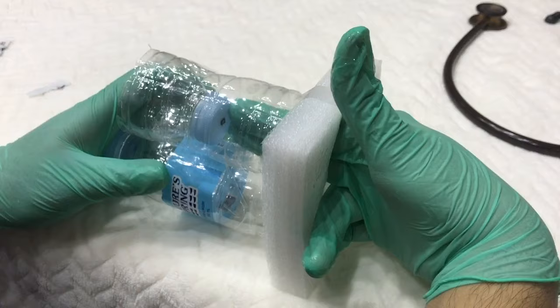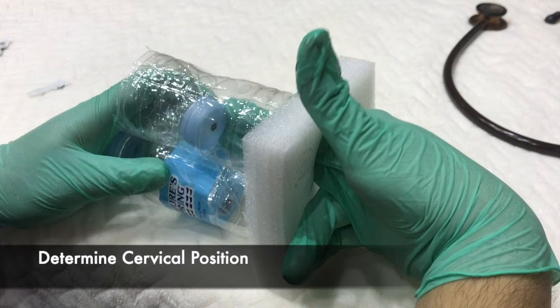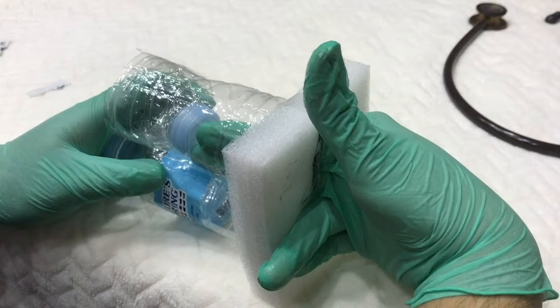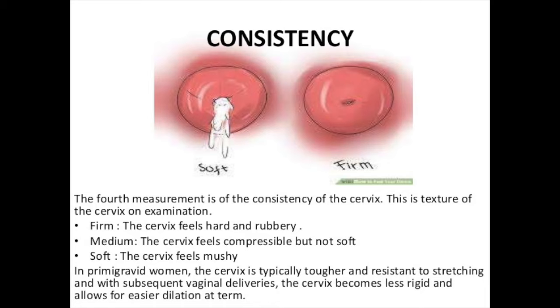The position of the cervix is determined by the relation of the cervical os to the fetal head and is categorized as posterior, mid-position, or anterior. Determine the consistency of the cervix as soft, firm, or intermediate between the two.